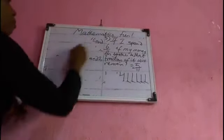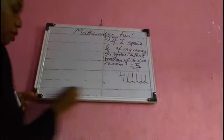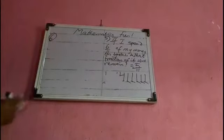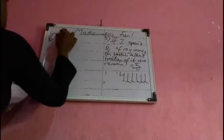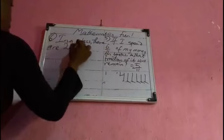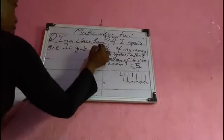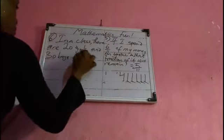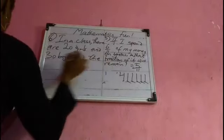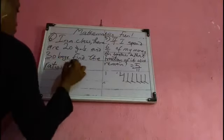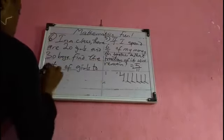Number six: in a class there are 70 girls and 30 boys. Find the ratio of girls to boys.